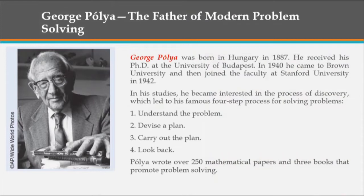George Pólya was born in Hungary in 1887. He received his Doctor of Philosophy at the University of Budapest. In 1940 he came to Brown University and then joined the faculty at Stanford University in 1942.